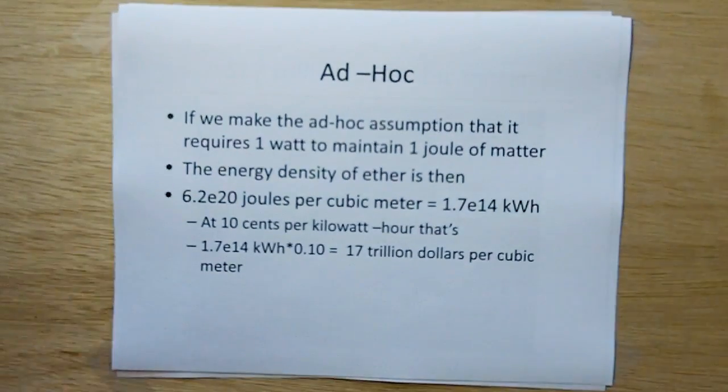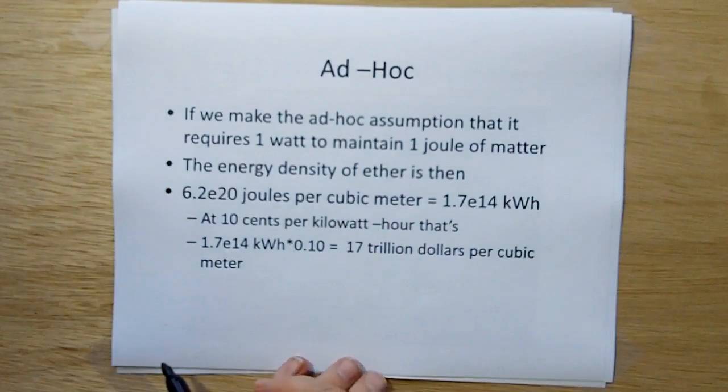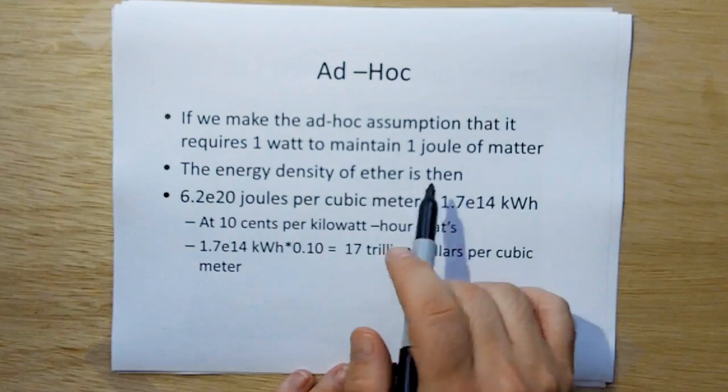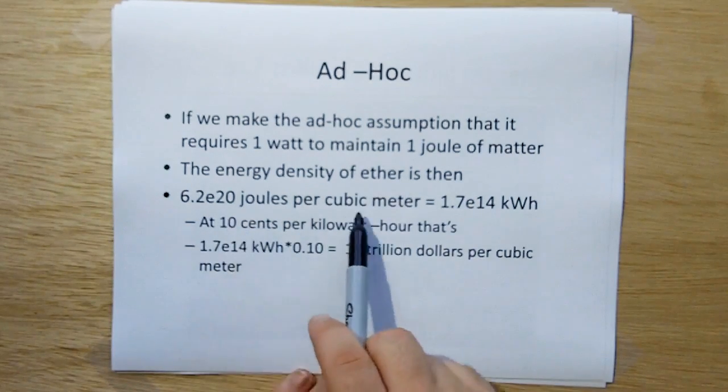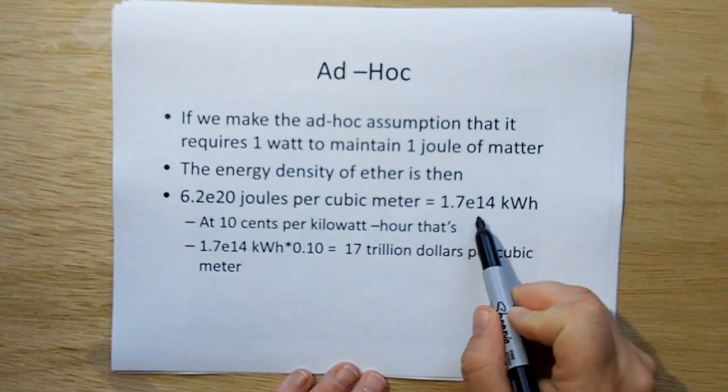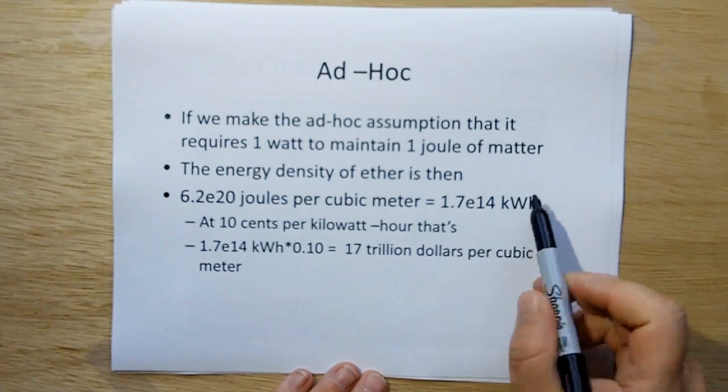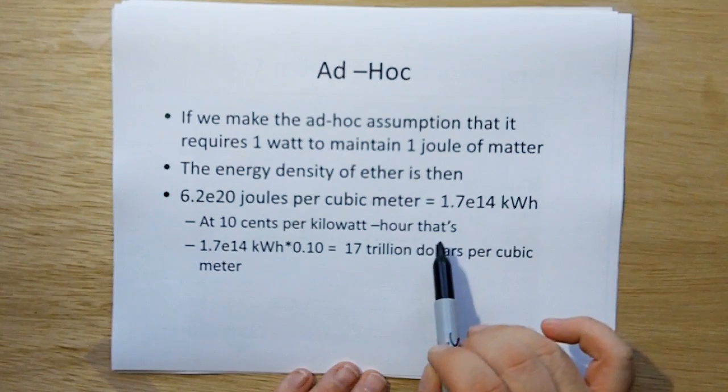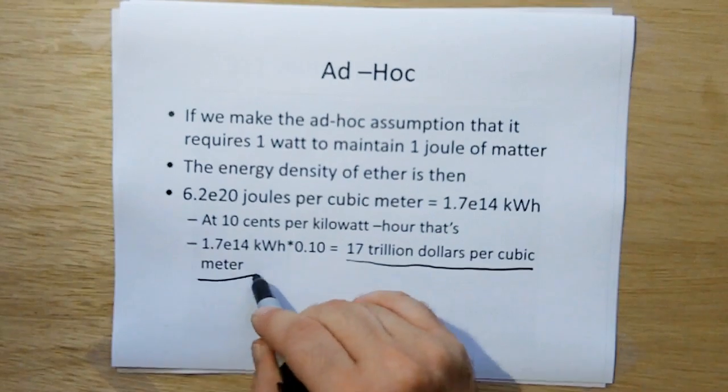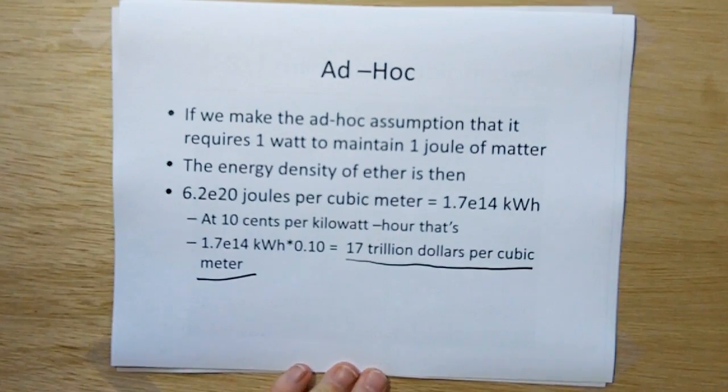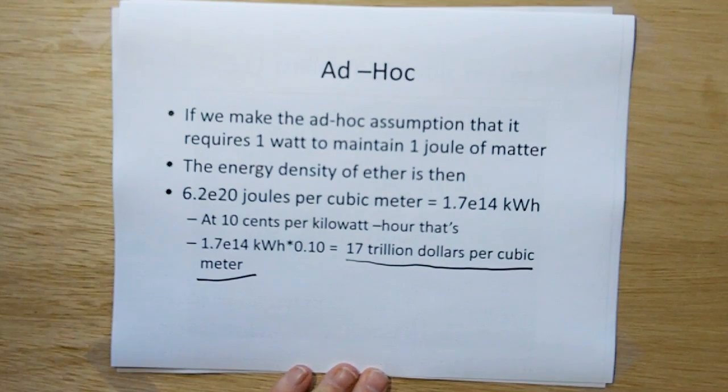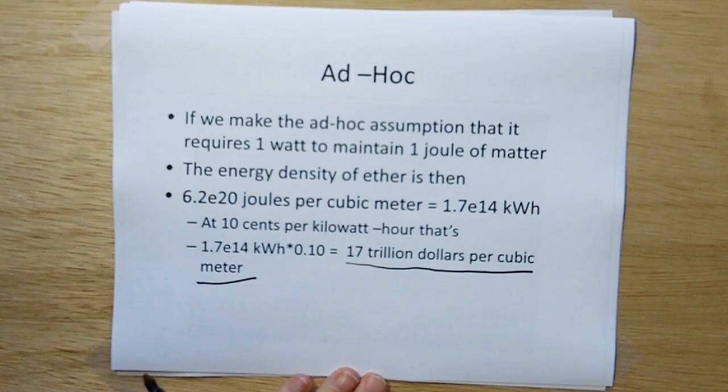Now if we do the ad hoc thing and assume that one watt is required to maintain one joule of matter, then the energy density of ether can then be reduced to 6.2 times 10 to the 20 joules per cubic meter. Which is 1.74 times 10 to the 14th kilowatt hours. At 10 cents a kilowatt hour, assuming I did the math right, that works out to 17 trillion dollars per cubic meter. Now granted, if someone actually figures out how to do this, the price of energy is going to sink to astronomically low rates. Which would be a good thing, I suppose.